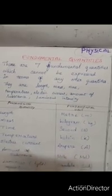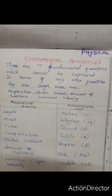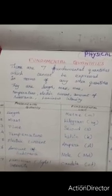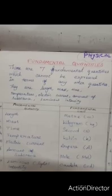Physical quantities are of two types: fundamental quantities and derived quantities. Fundamental quantities are the quantities which cannot be expressed in terms of any other quantities.